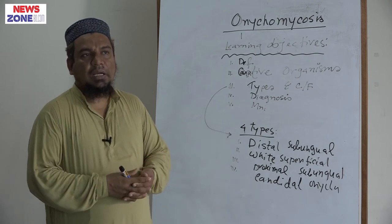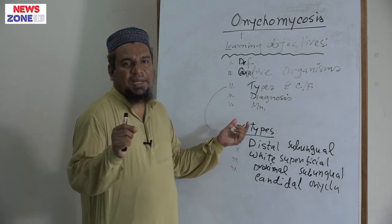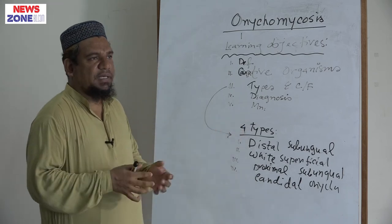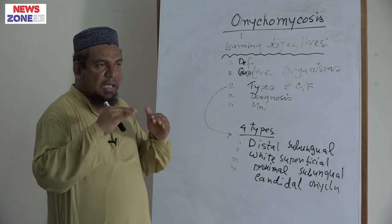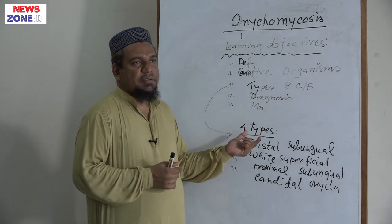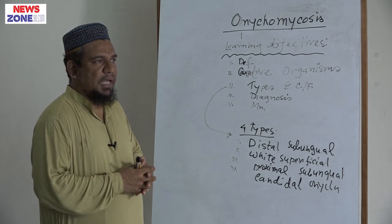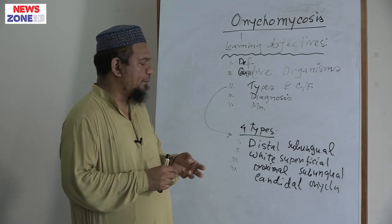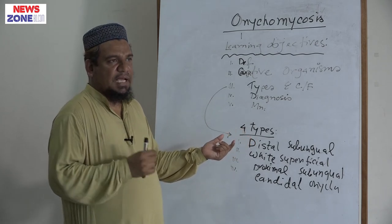Distal subungual onychomycosis is caused by Trichophyton rubrum, the most common pathogen. It starts at the distal part of the nail plate and spreads proximally, with thick or whitish channels within the nail plate. It also involves the hyponychium — that is, the undersurface of the nail plate and cuticle. Gradually it involves the entire nail plate and produces hyperkeratosis, whitening or creamy discoloration, and sometimes brittleness or fragility of the nail plate.